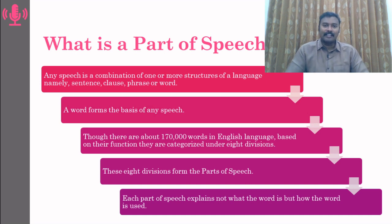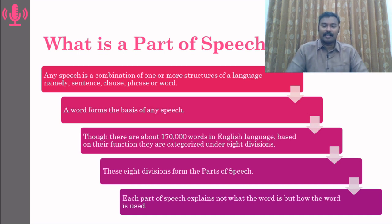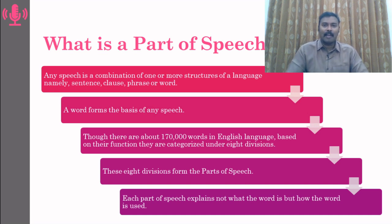When you take the English language, there are about 170,000 words. Each and every day we find that the number of words is increasing. Maybe in another 5 to 10 years, we will be having around 500,000 words. But however many thousands, millions, or trillions of words are added to English, all these words are categorized under only 8 different sections — 8 different divisions called parts of speech.